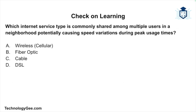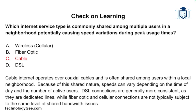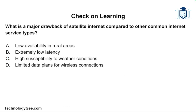Question 2: Which internet type is commonly shared among users in a neighborhood, potentially causing speed variations during peak usage times? The options are wireless cellular, fiber optic, cable, or DSL. The correct answer is cable internet. Cable internet operates over coaxial cables and is often shared among users within a local neighborhood, so speeds can vary depending on time of day and number of active users. DSL connections are generally more consistent as they are dedicated lines, and fiber optic and cellular are not typically subject to the same shared bandwidth issues.